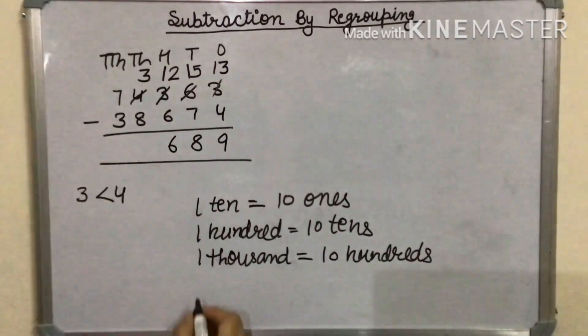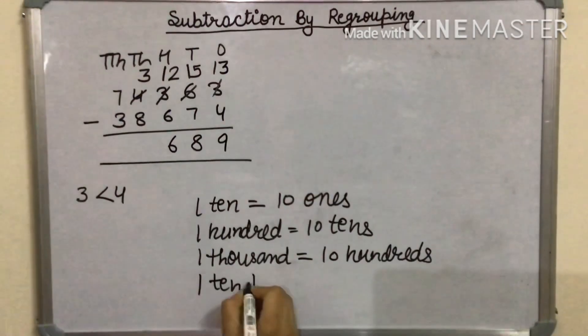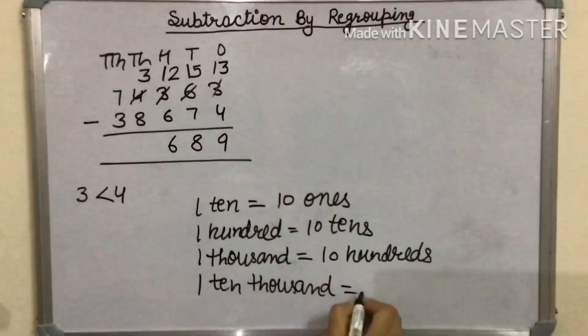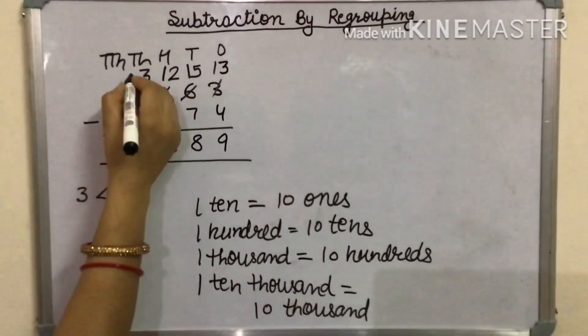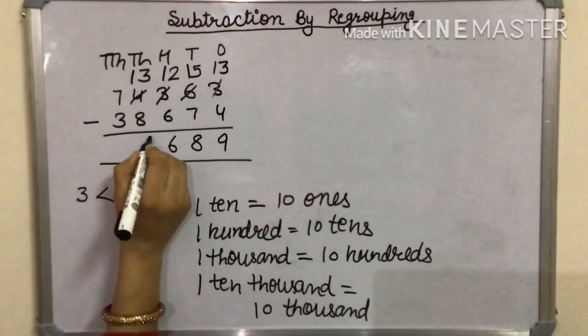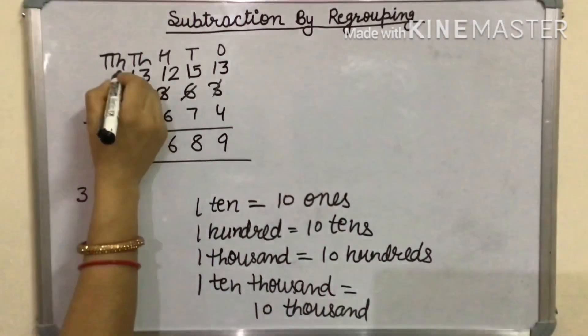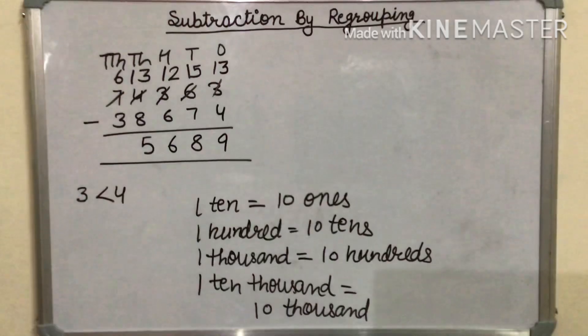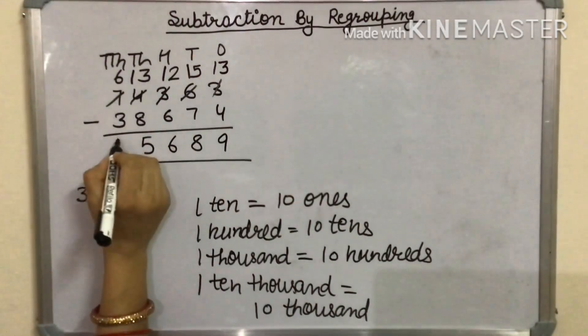We will borrow 1 ten-thousand. This is equal to 10 thousands. At the 1,000th place, it will be 13. 13 minus 8 is 5. At the 10,000th place, it remains 6. 6 minus 3 is 3.